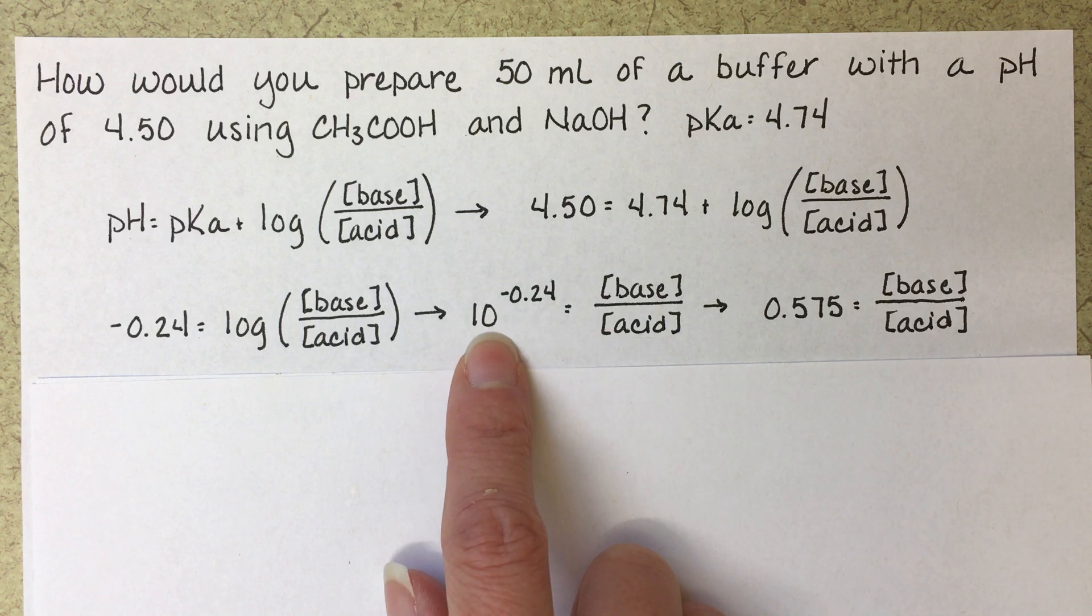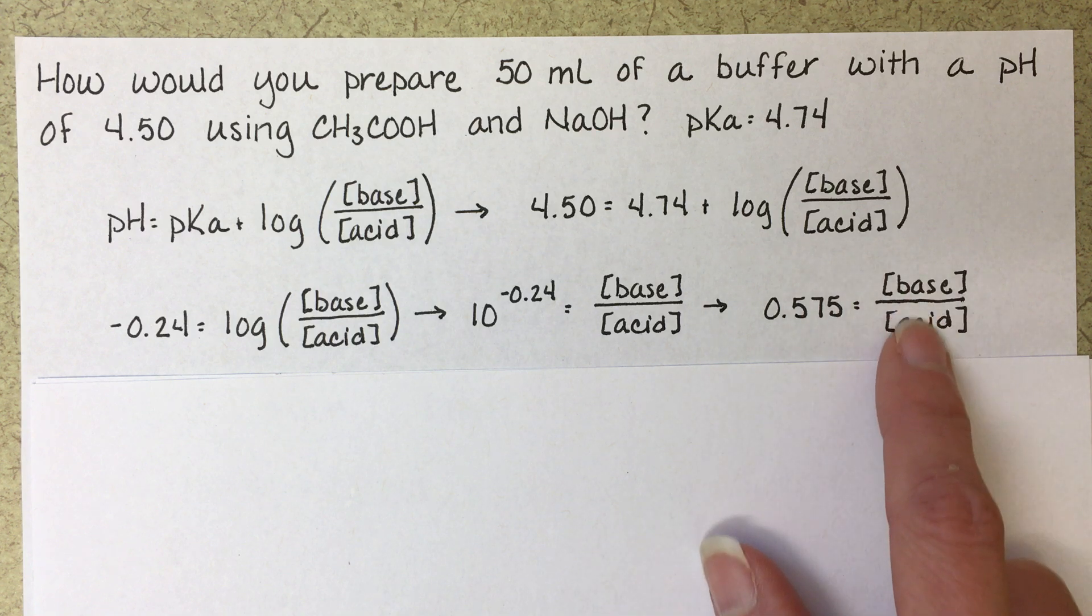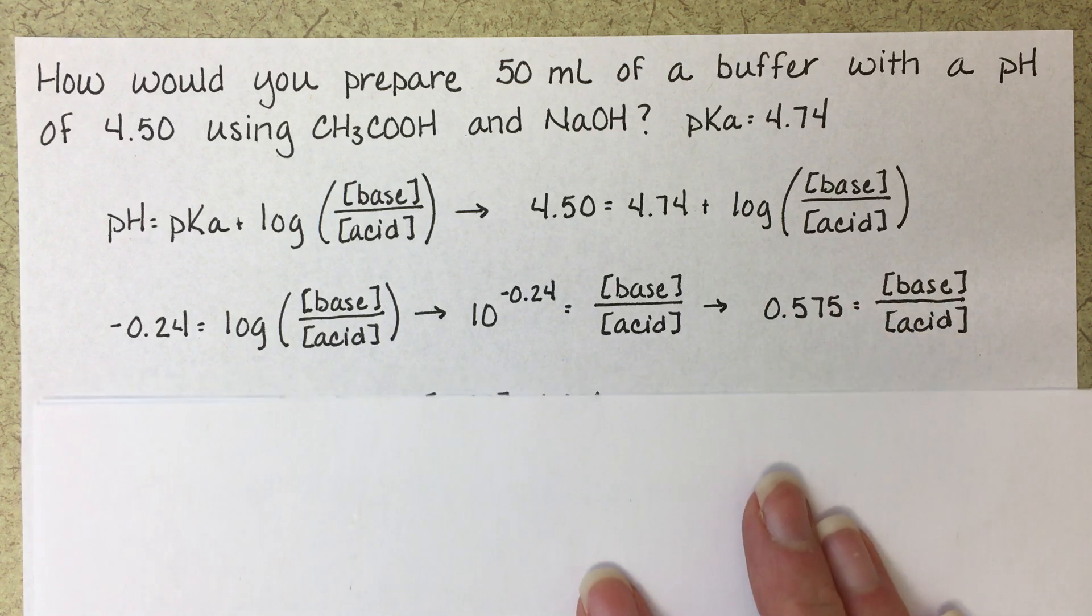Working the math out, 10 to the minus 0.24 is equal to 0.575. And that's our desired ratio of base to acid.